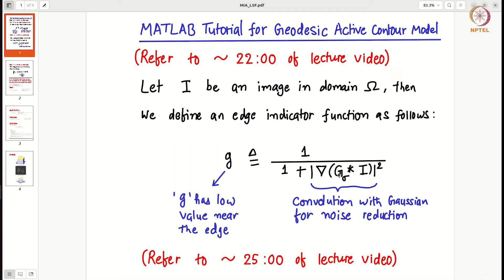And then this indicator function, as you can see, when gradient is high its value becomes low. So this is the purpose of it.